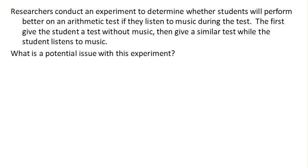One more example: suppose researchers conduct an experiment to determine whether students will perform better on an arithmetic test if they listen to music during the test. They first give the students a test without music, and then give a similar test while the students listen to music, and then see if they perform better on the second test. There is an issue with this, and it is also confounding. The confounding variable is the order of testing.